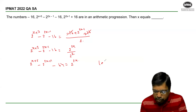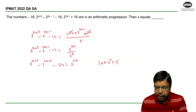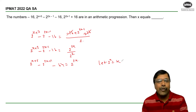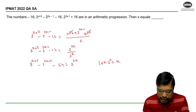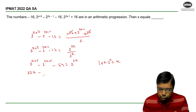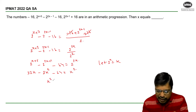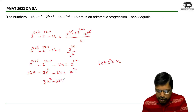Now, let me replace 2^x with k so that I will be able to visualize the equation better. So, this becomes 32k minus 2k² minus 64 equals k², which can be rearranged to 3k² minus 32k plus 64 equals 0.